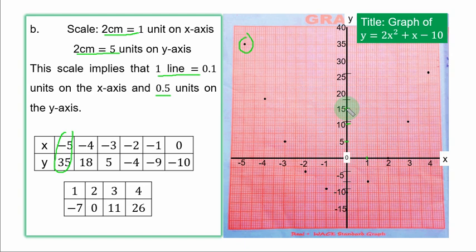So you plot the first set of values. When s is minus 5, y is 35. When s is minus 4, y is 18. On the y axis, 2 lines is 1. So if you count the first 2 lines, you have 16, the next 2 lines 17, the next 2 lines 18. So you plot it against minus 4. When s is minus 3, y is 5. That is what you have here.